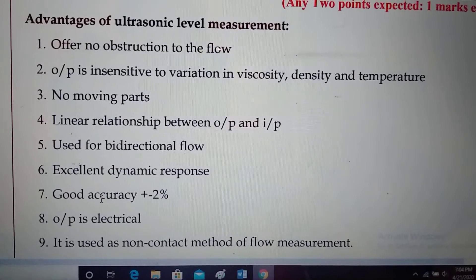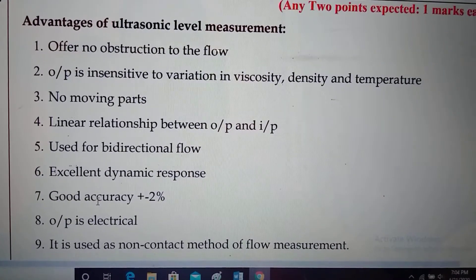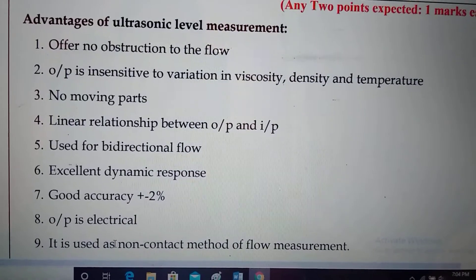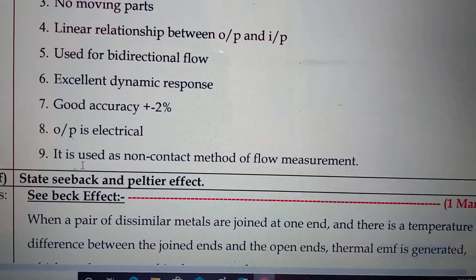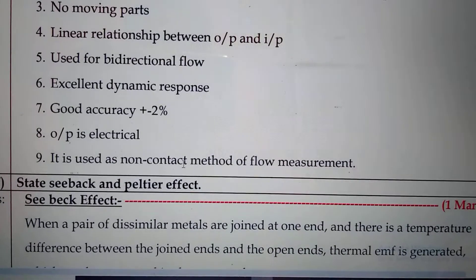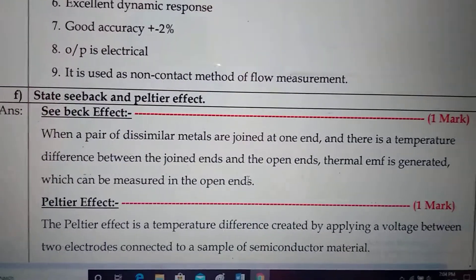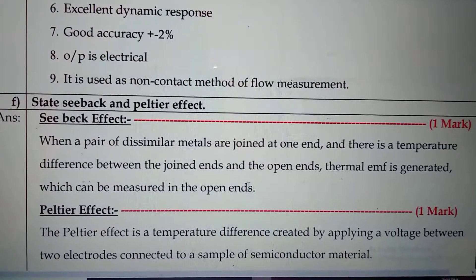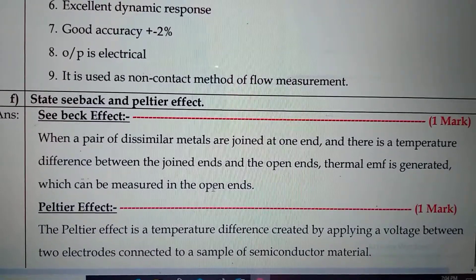Seventh, good accuracy — that is, plus or minus two percent. Eighth, output is electrical. Ninth, it is used as a non-contact method of flow measurement. Now let's see the next question: Question number (f): State the Seebeck effect and Peltier effect.